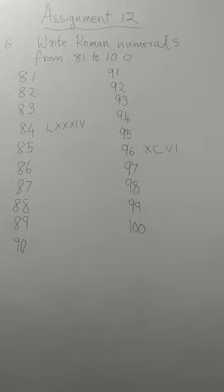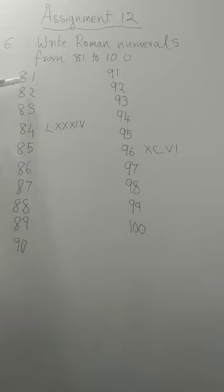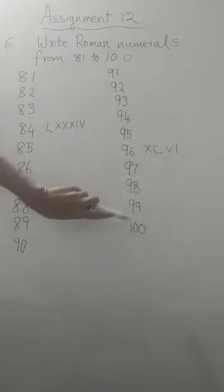Next going to page 80, that is the 6th question, that is write the Roman numerals from 81 to 100. So from 81 to 100, you have to write in Roman. Here, so I have written in Hindu Arabic, 81, 82 till 90, 91, 92, 93, 94, 95, 96, 97, 98, 99, 100.